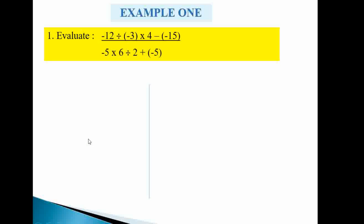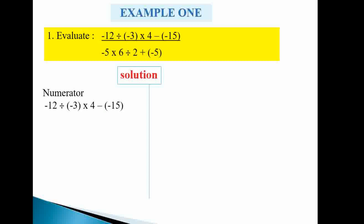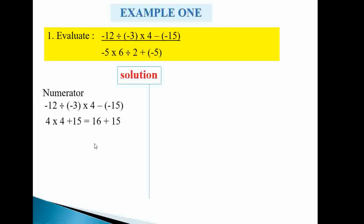Using BODMAS on the numerator: division comes first, so negative 12 divided by negative 3 gives 4. Then 4 times 4 gives 16. The minus negative becomes plus, so 16 plus 15 gives 31. The numerator equals 31.